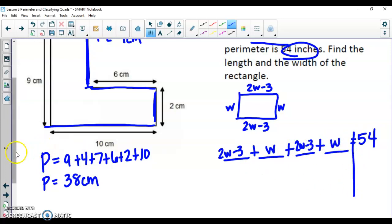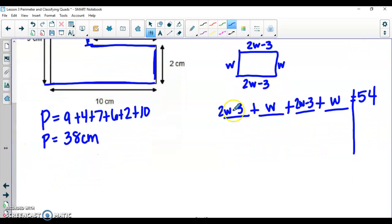My next step is to go ahead and combine like terms. So you are going to, 2w plus w is 3 plus 2 more is 5 plus 1 more is 6. So I have 6w and I have a minus 3 here and a minus 3. So a minus 3 and a minus 3 or a negative 3 and a negative 3 are going to give me a negative 6. This is still going to be equal to 54.